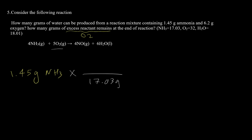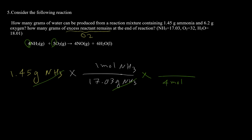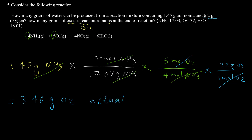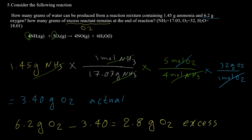Continuing the calculation: using the ratio 4 mol NH₃ = 5 mol O₂, then converting mol O₂ to grams (32 g/mol), we get 3.40 grams of O₂ actually needed for the reaction. We started with 6.2 grams of O₂, so subtracting the amount used: 6.2 − 3.40 = 2.8 grams of O₂ remain as excess at the end of the reaction.